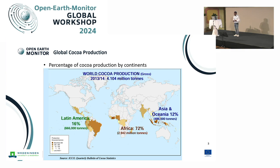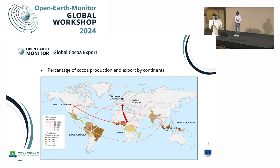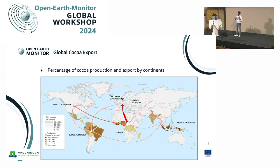More than 72% of the cocoa farmers are coming from Africa, 16% in Latin America, and 12% in Oceania. You can see the disparity: most of this production is occurring along the pan-tropics, but then the consumption is mostly occurring in other regions — in North America, Europe, and Asia.